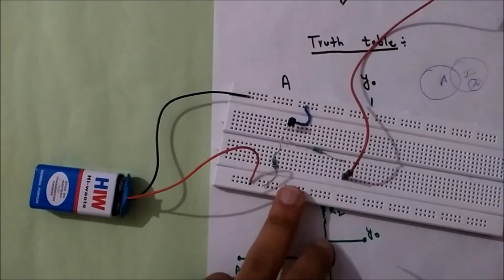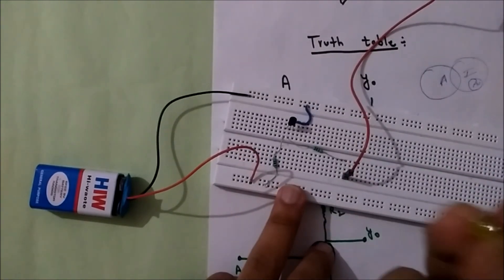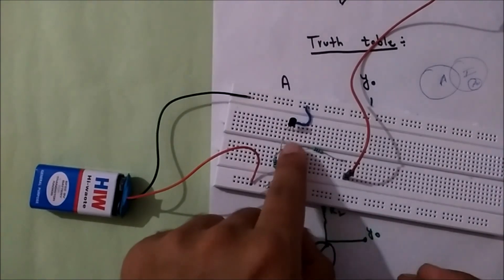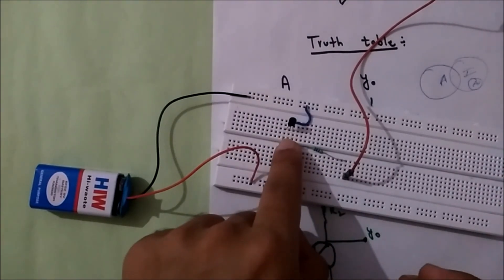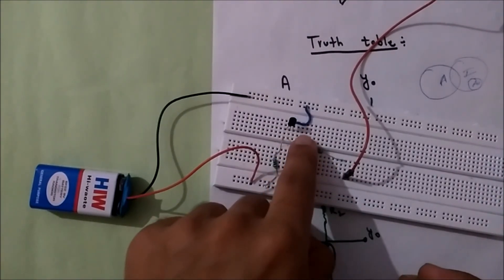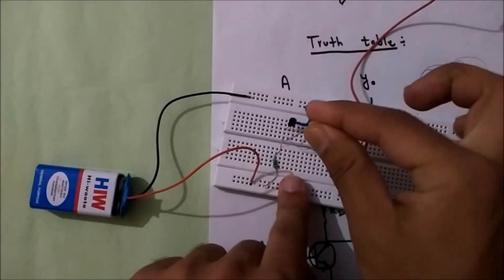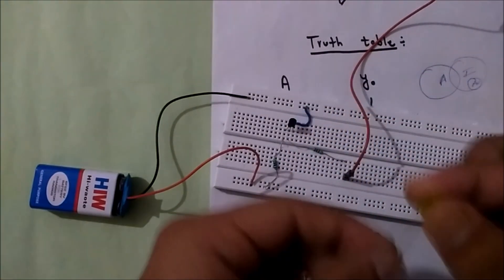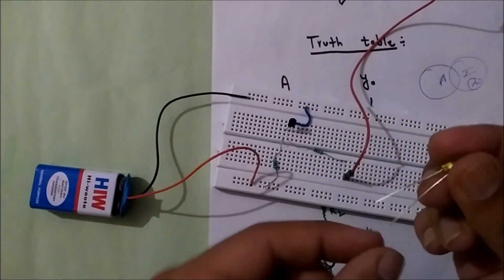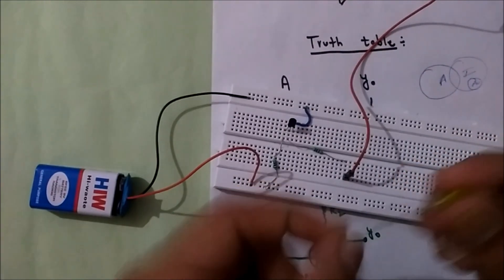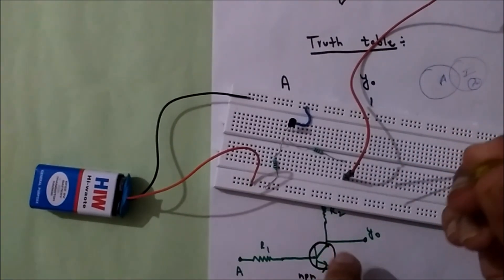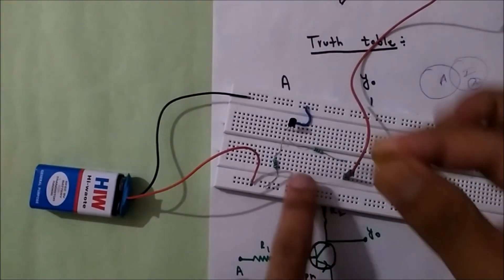To see the output, I'll connect an LED here. The output is taken between the collector and emitter terminals, so I should connect this LED between the collector and emitter — that means between the first and third terminal. Remember, the positive terminal of the LED should be connected to the collector, as it is at higher potential.